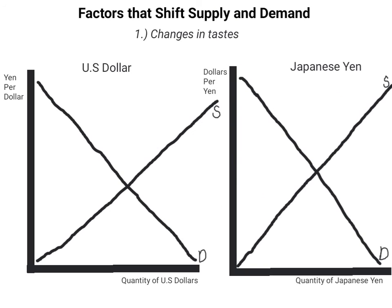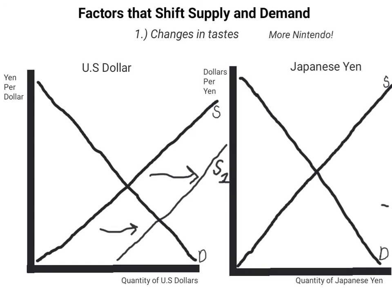Now we are going to get into the factors that shift supply and demand and, by extension, the exchange rate. An increase in preference for a particular product can cause changes in the exchange rate. For example, if the people in the US decided they wanted more Nintendo games, this would cause the supply of US dollars to shift to the right, as more people would be providing US dollars in the foreign exchange market in order to purchase the games. The demand for the Japanese yen would also shift to the right, as there is now an increase in the number of people wanting the yen. As you can see, in this scenario, the US dollar has depreciated, while the Japanese yen has appreciated.